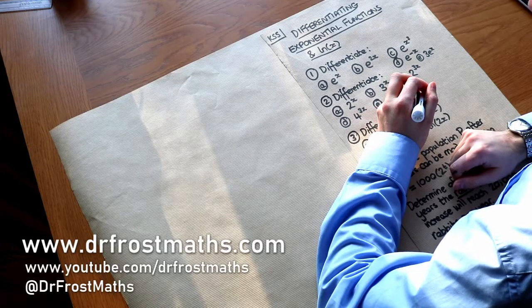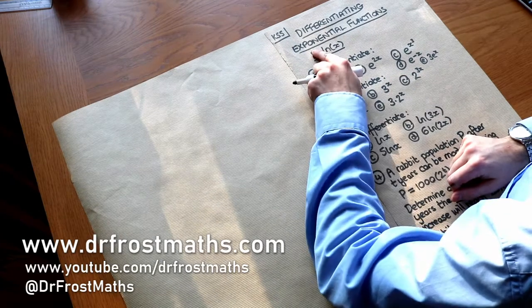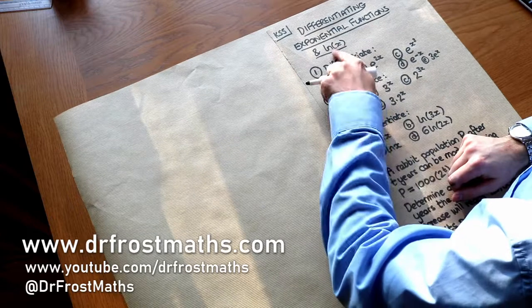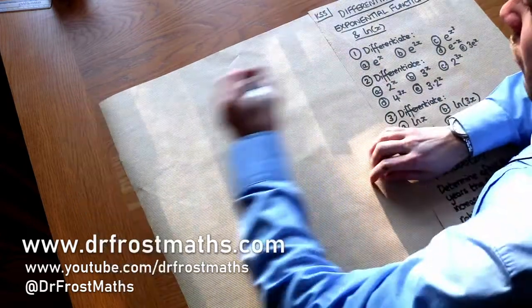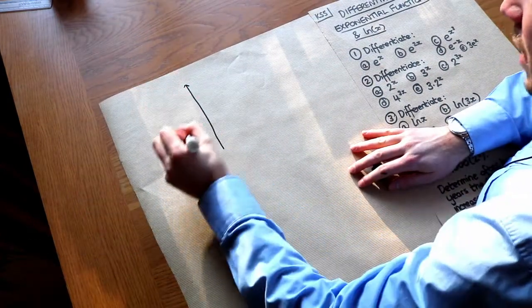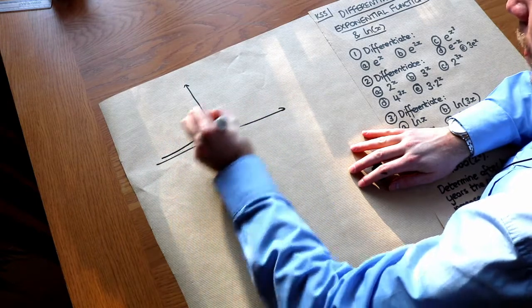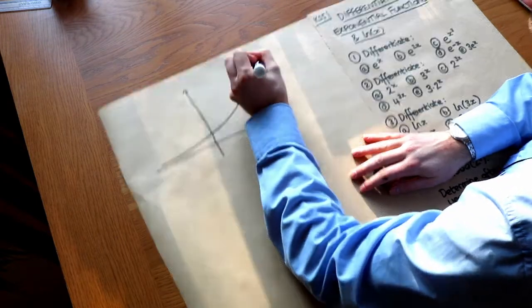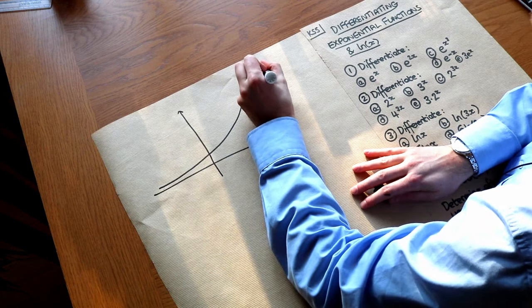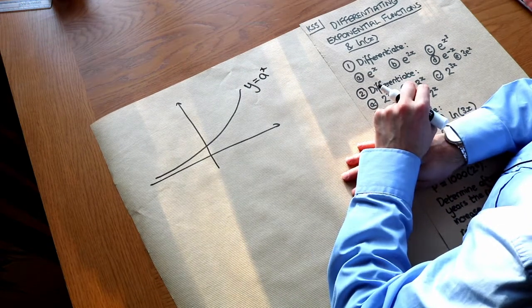Hello and welcome to this Dr. Ross Maths video on Key Stage 5 differentiating exponential functions and ln of x. Now recall that what I mean by an exponential function is one that's of the form y equals some constant to the power of x.